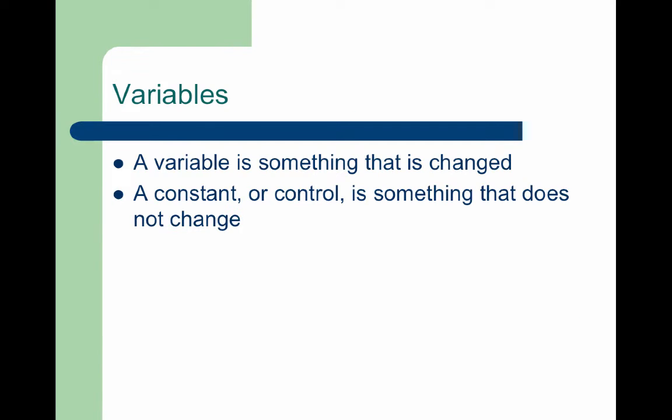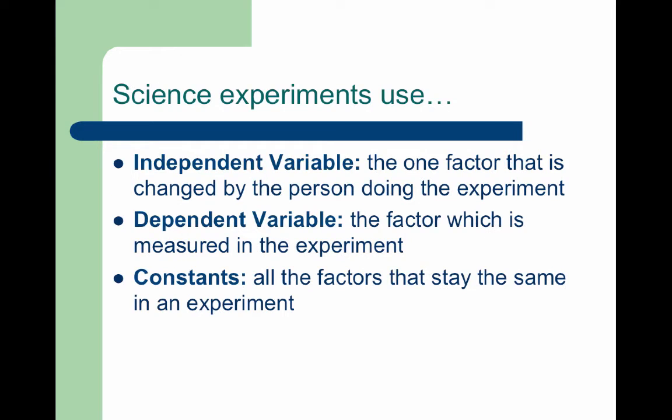In science experiments we have variables — things that we change — and constants or controls, things that we don't change. Both of these are essential in creating a good scientific experiment and ensuring that your results are fair.